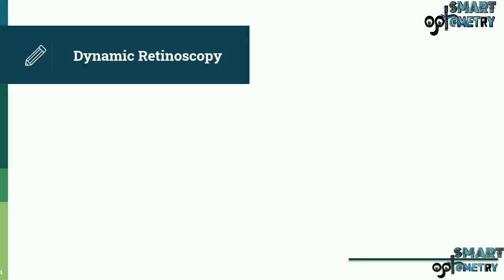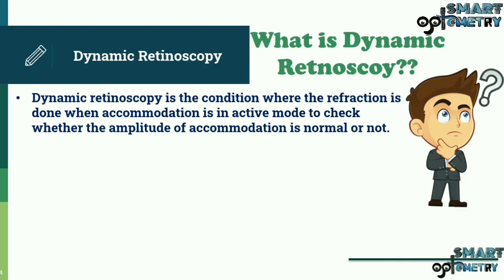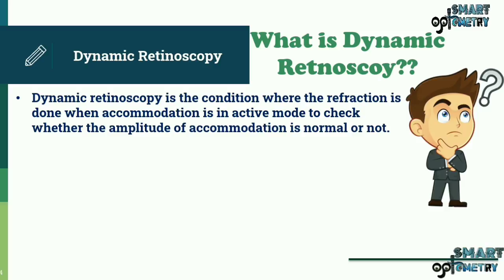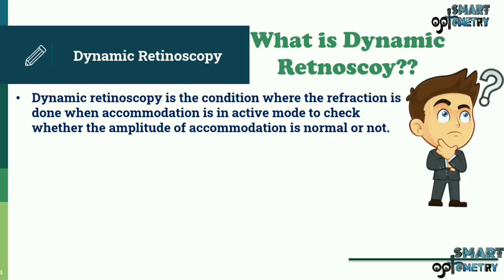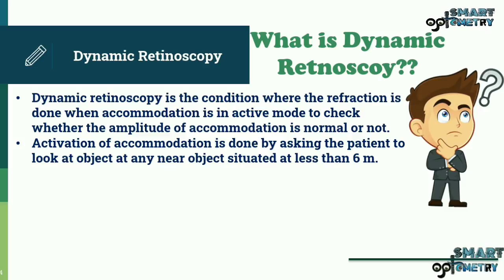Dynamic retinoscopy is the condition where refraction is done when accommodation is in active mode, to check whether the amplitude of accommodation is normal or not. Activation of accommodation is done by asking the patient to look at a near object situated less than 6 meters.